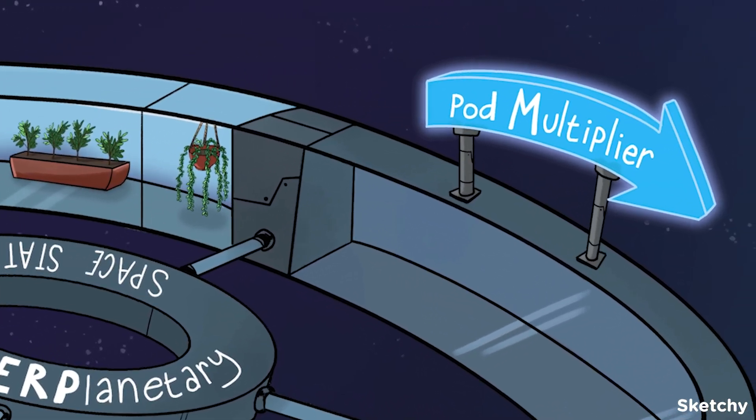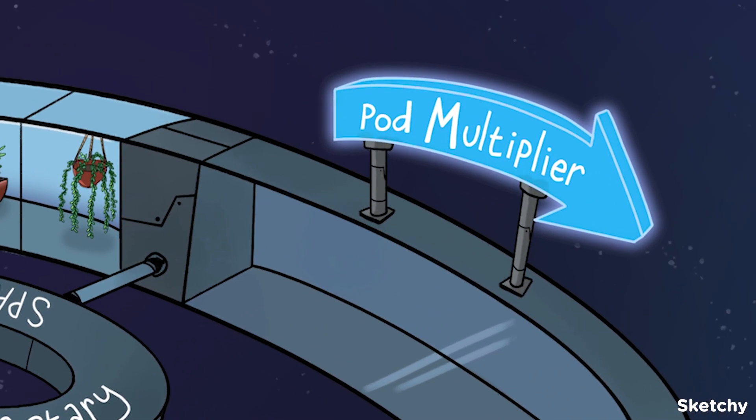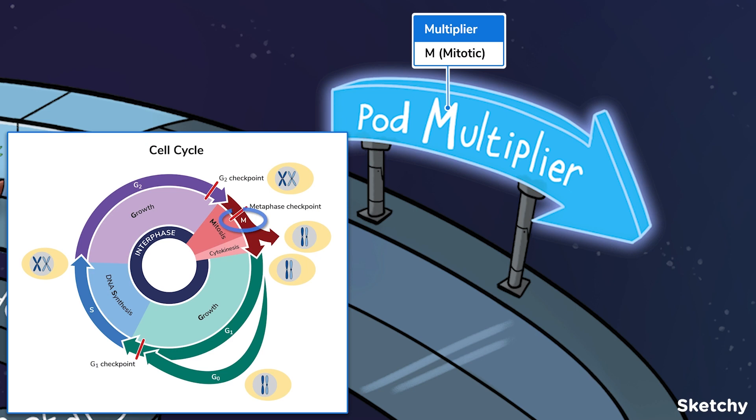And we're off to the multiplier — this is where the space pods get built. During the M phase, a cell goes through nuclear and cytoplasmic division, creating two daughter cells that share the same number of chromosomes. See our video on mitosis for a lot more about this.